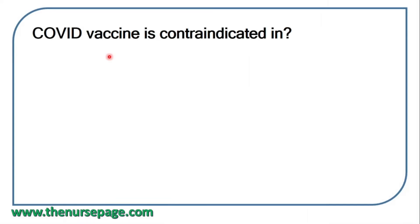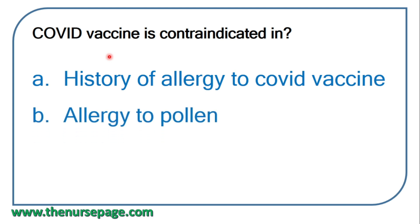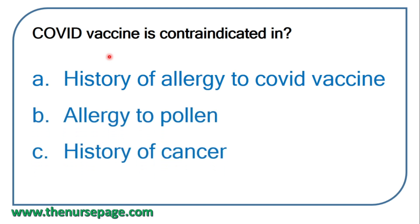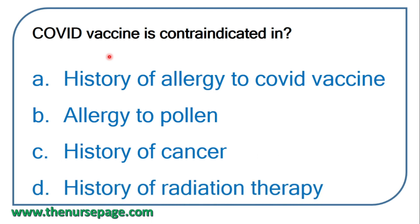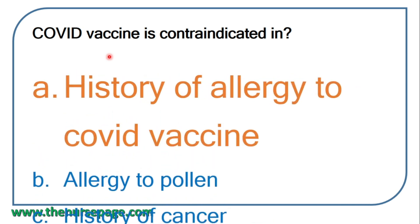Next question: COVID vaccine is contraindicated in patients with a history of allergy to the COVID vaccine. If there is a previous history of allergy to the COVID vaccine, it is contraindicated.